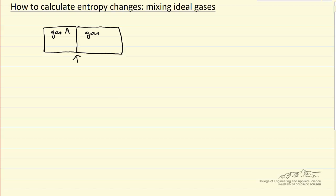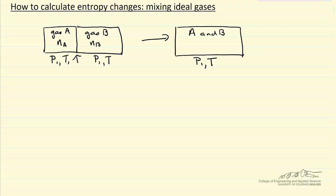Separated say by a diaphragm here. So gas A, gas B, and nA is number of moles of A, pressure one, temperature one. Important, same pressure, same temperature. And the idea is if we were to break that diaphragm, we end up with one container and we have A and B together, so we'd like to know the entropy change.